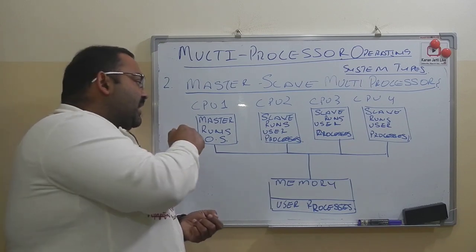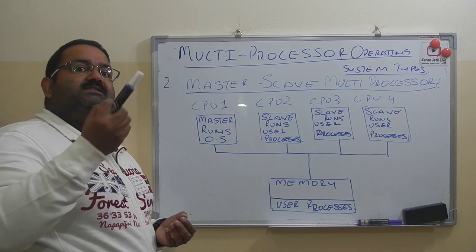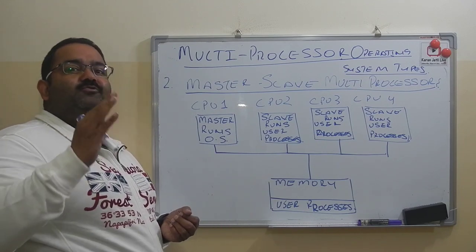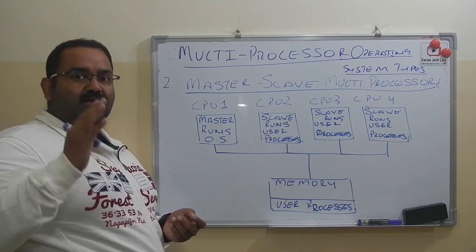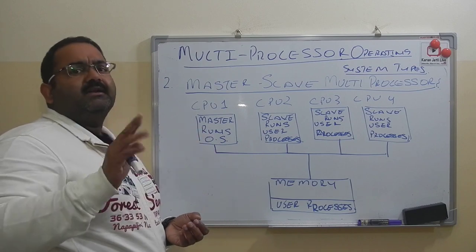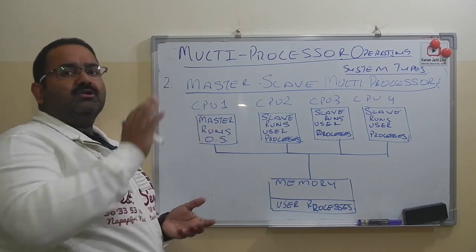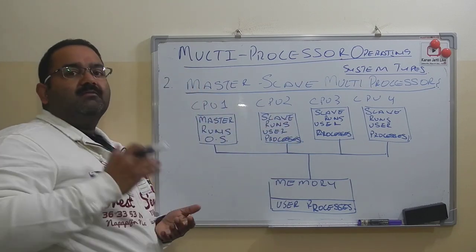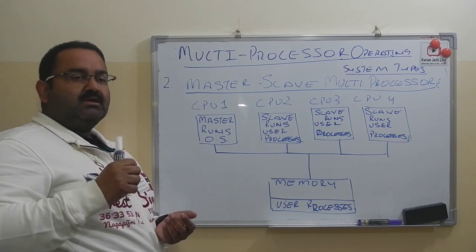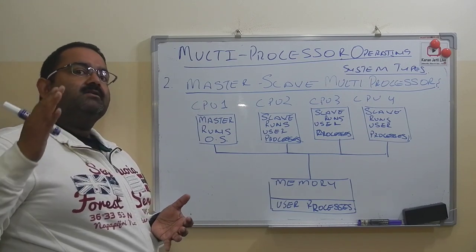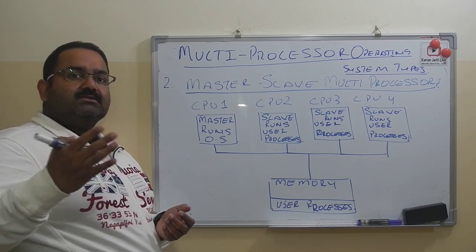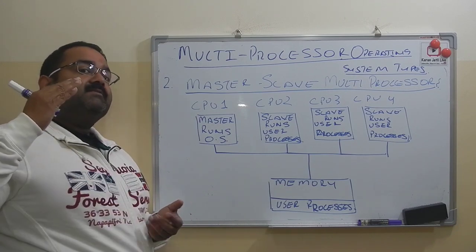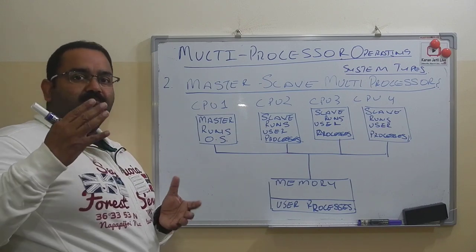The master handles all system calls, and the slaves handle user processes. If the master CPU is free after handling all system calls, it can also run user processes. So in master-slave multiprocessors, one master runs the operating system and handles all system calls, while the slaves request the master for system calls and themselves handle all user processes.